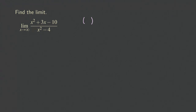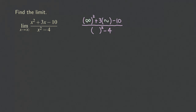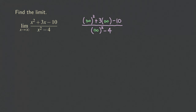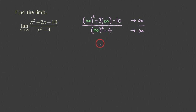We analyze the function by direct substitution behavior. You can't substitute infinity as an actual number, but we can analyze the behavior. The numerator approaches infinity because infinity squared plus 3 times infinity minus 10 is still infinity. The denominator also approaches infinity because infinity squared minus 4 is still infinity. So we have infinity over infinity — another indeterminate form — which allows us to use L'Hôpital's rule.